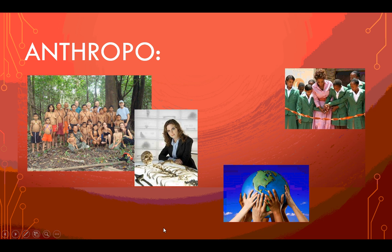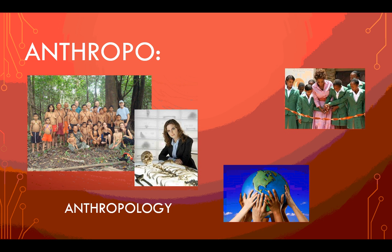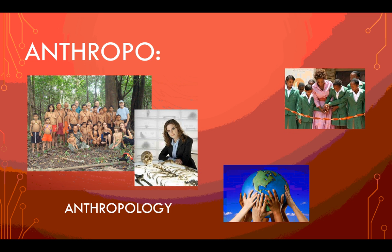Anthropo. Let's start with the photos on the left. Our first word that uses this root is anthropology. Some people are familiar with this word because they watch the popular television show Bones — she's a forensic anthropologist. She studies humans, particularly human remains, to solve crime. The other photo I pulled off the internet — I searched for anthropologists in the field, and this is the Matisse Indian tribe. The people in the back wearing Western clothing are anthropologists who study people by spending time with them. There are lots of different variations of anthropology.